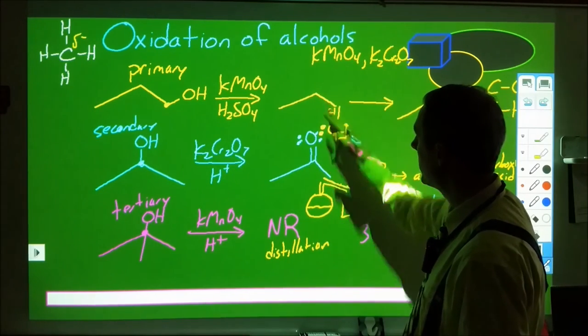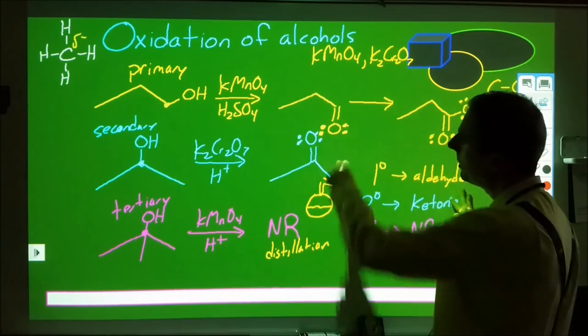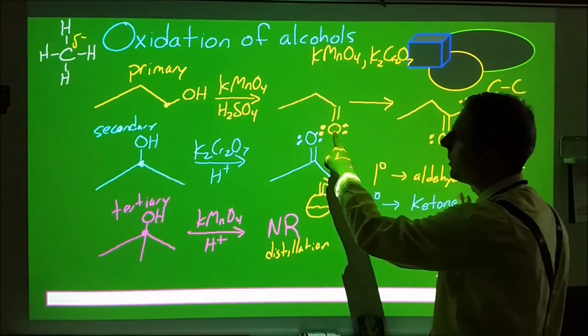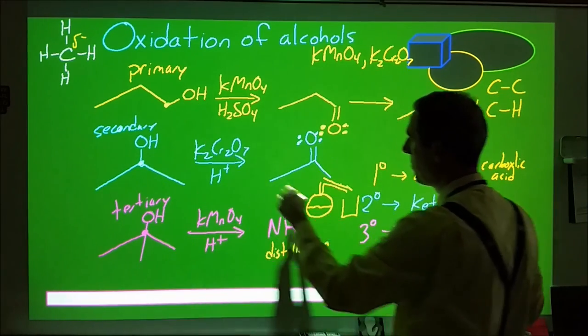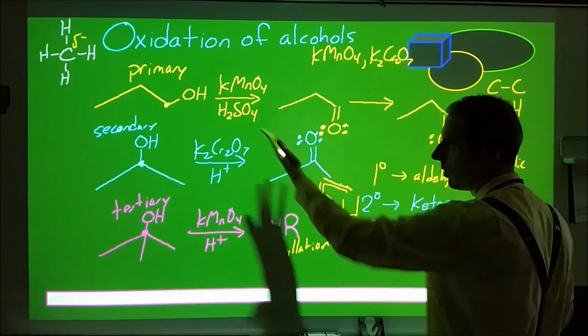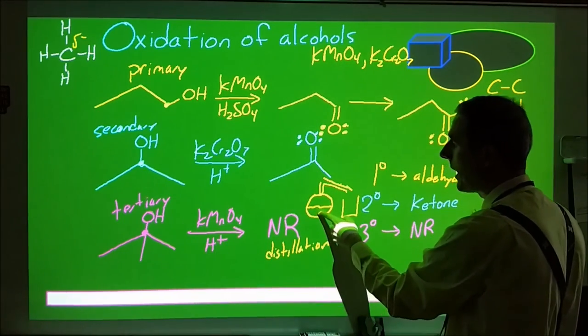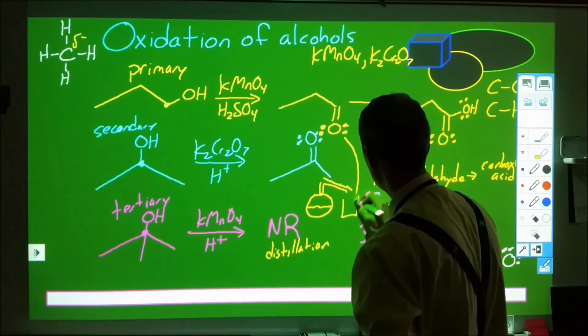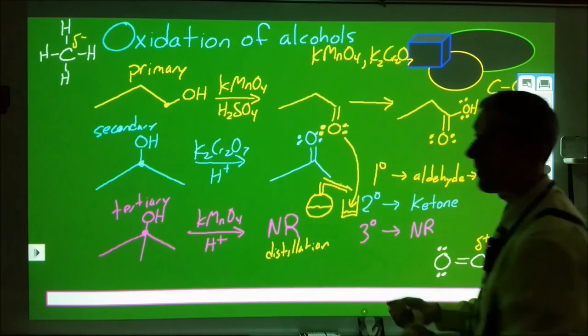As the aldehyde gets produced, we're heating this. The aldehyde is going to be at a lower boiling point than the alcohol because this does not have hydrogen bonding capabilities, and they have essentially the same molar mass. The dispersion force is the same, and we have no hydrogen bonding. So the aldehyde, as it gets produced, is going to collect over here and separate out.